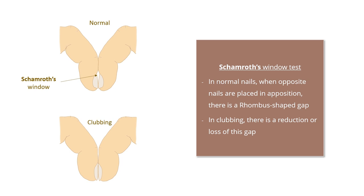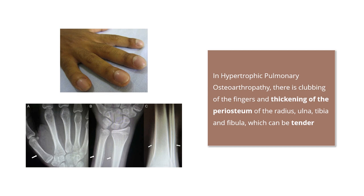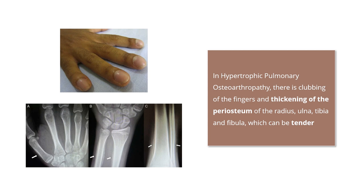In clubbing, this window is lost, and this is known as the Schamroth window test. In hypertrophic pulmonary osteoarthropathy, there is clubbing of the fingers and thickening of the periosteum of the radius, ulna, tibia and fibula, which can be tender.